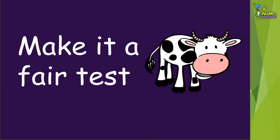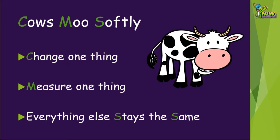When we're doing science investigations, it's important to make it a fair test. What does a cow have to do with this? An easy way to remember how to do a fair test is using the saying cows move softly. The C stands for change one thing. In this investigation we'll be changing the color of the highlighters or paper. The M stands for measure one thing. We'll be measuring which color changes the most. The S stands for everything else stays the same. So we need to make sure all other things in our investigation are kept the same.